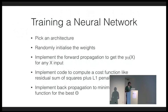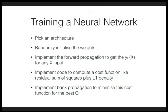As a recipe, we have a technique for training neural networks. Pick an architecture, randomly initialize the weights, implement forward propagation to get your model for any input x, implement code to compute the cost function like residual sum of squares plus some penalty, implement backpropagation to minimize the cost function for the best theta, and train your neural network with the training data. We'll probably not find a global optimum, but gradient descent does quite a good job.